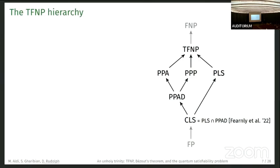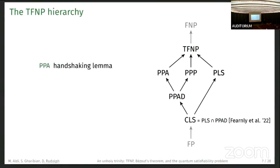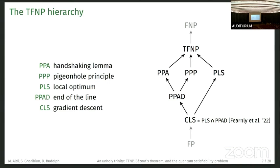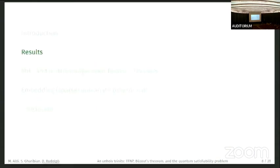A little bit more about TFNP. TFNP also forms a hierarchy. We have TFNP on top and CLS at the bottom, and these all follow from mathematical principles. PPA is handshaking lemma on graphs. PPP is the pigeonhole principle. PLS is searching for local optimum. PPAD is the end-of-line problem. CLS is gradient descent. It's been shown recently, which was very difficult, that the intersection of finding a local optimum and following the end-of-line is actually gradient descent, which intuitively makes sense.